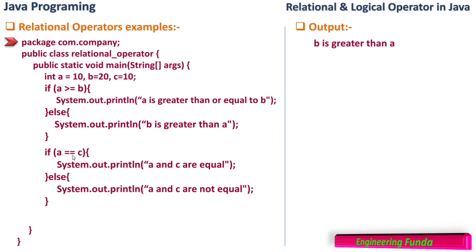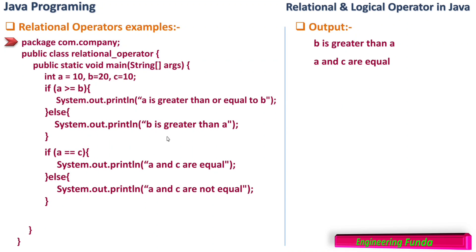The second if condition checks a equal to equal to c, testing the equality of a and c. The value of a is 10 and the value of c is also 10, so this condition a == c is true. Since the condition is true, we go inside the if block and print 'a and c are equal'. The output shows 'a and c are equal'.